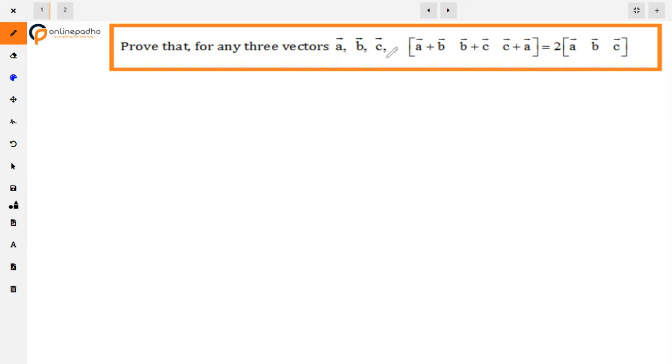Look, A, B, C are three vectors given and we have to prove that the scalar triple product of these vectors equals two times A, B, C. So let's start from the left-hand side. We have the first vector A plus B, the second vector B plus C, and the third vector C plus A.